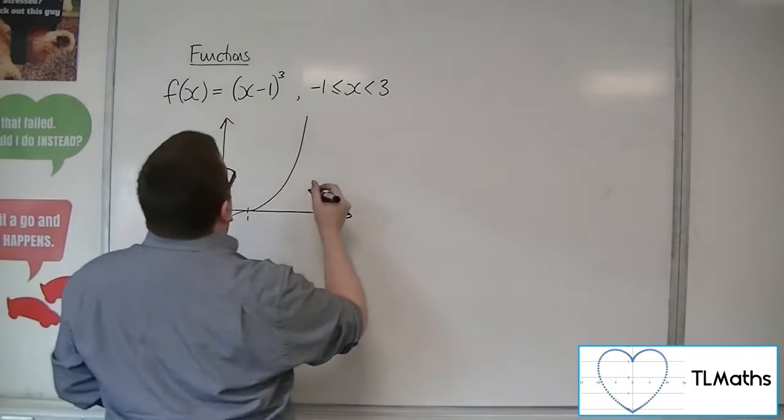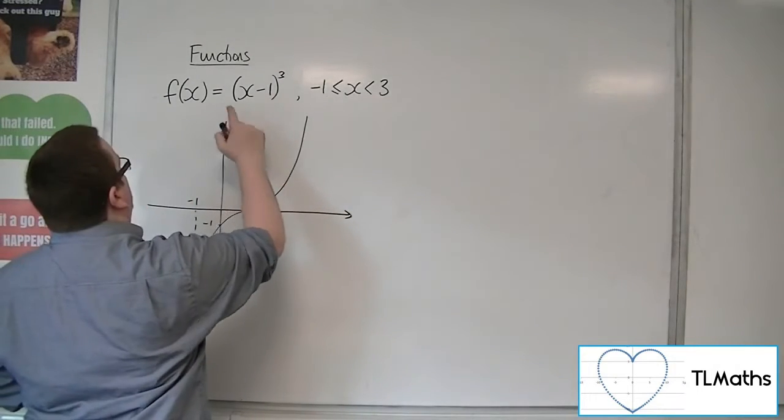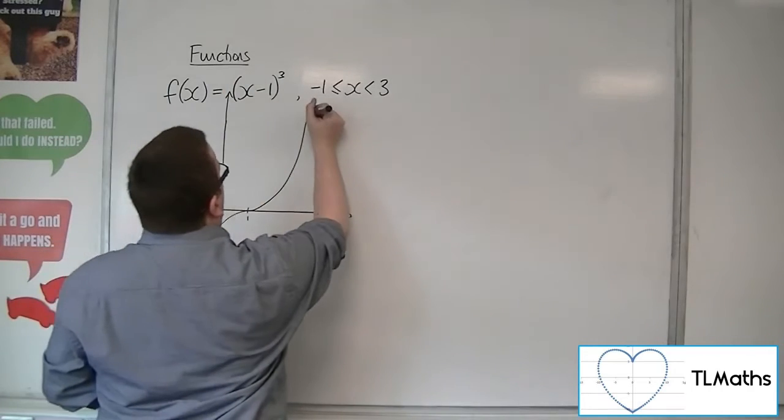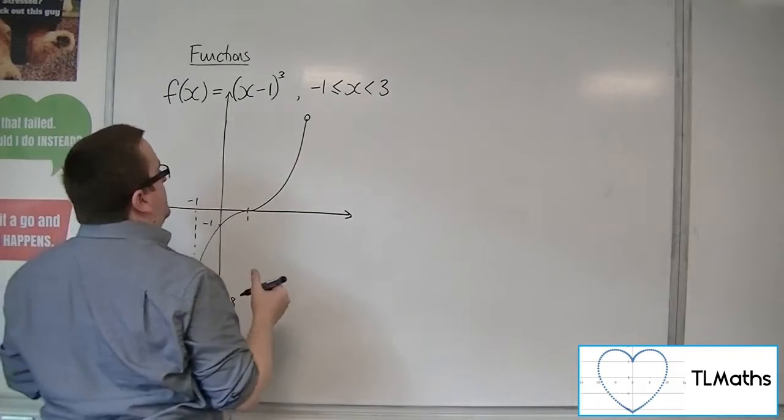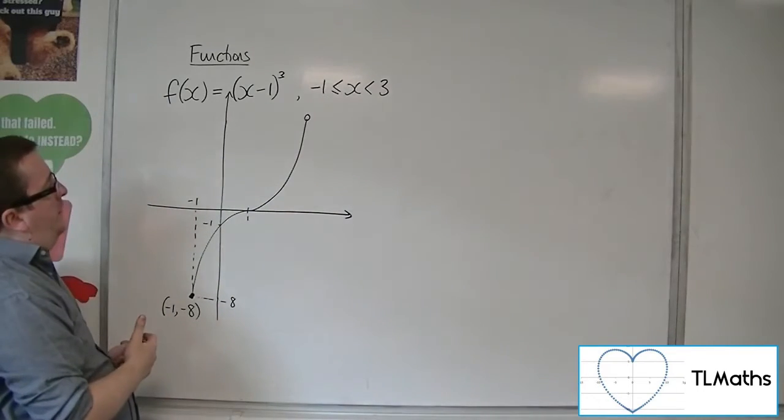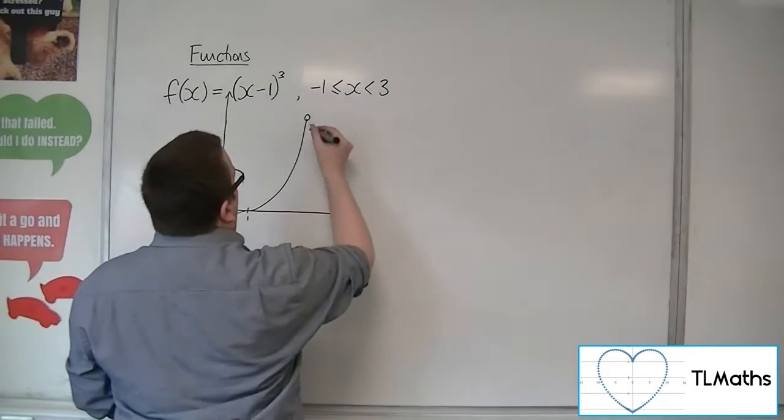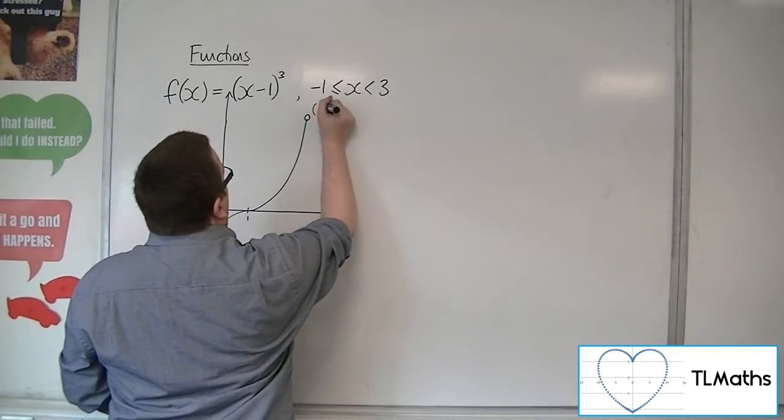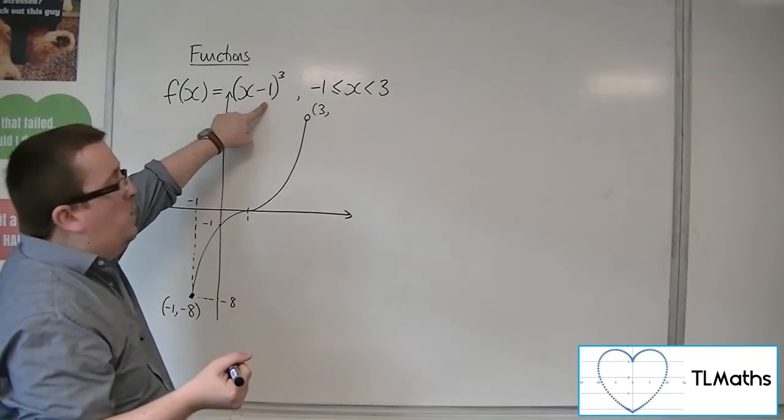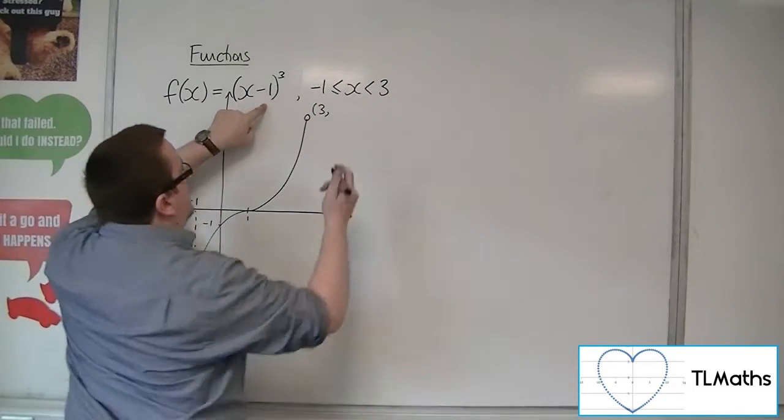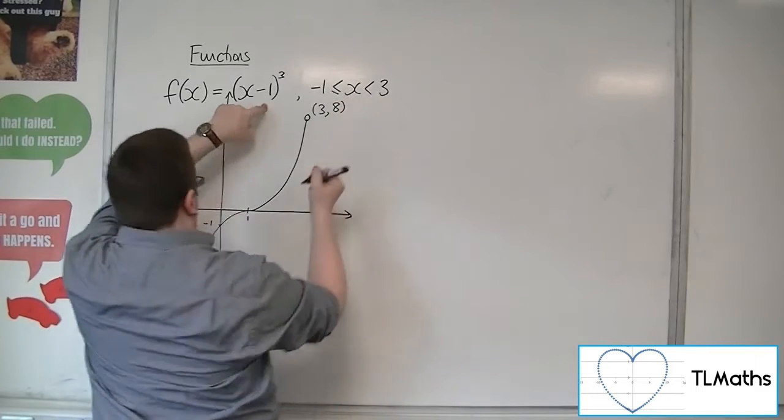Now, this point up here is going to be my end point of the graph. So that would be when x is 3. So when x is 3, I get 3, take away 1, so 2, 2 cubed, so 8. So that's 3, 8.